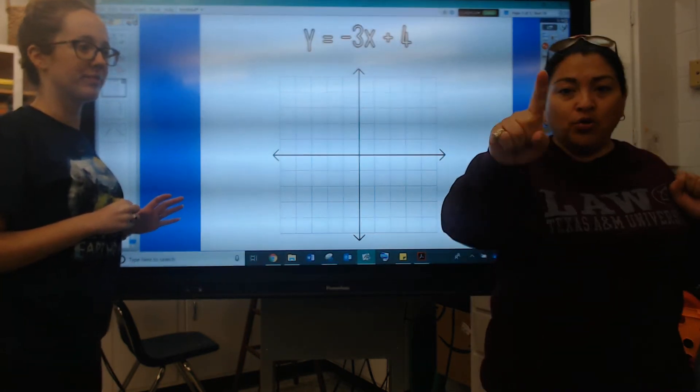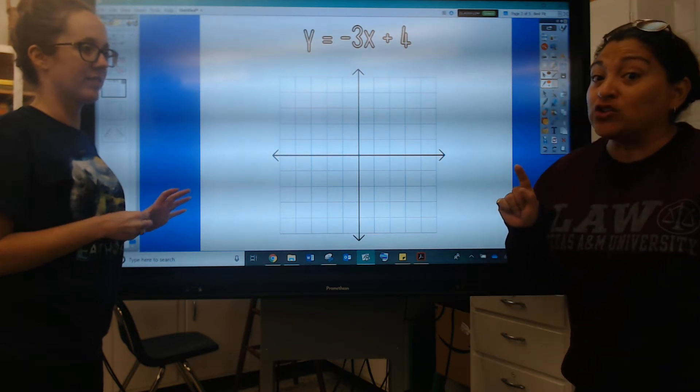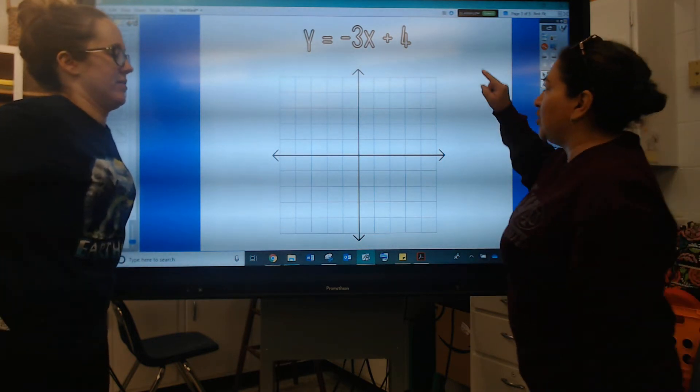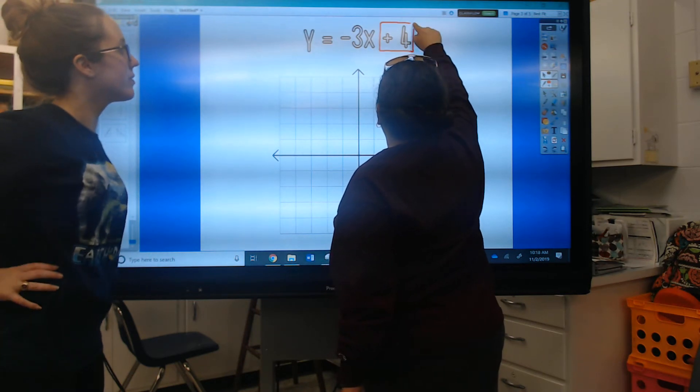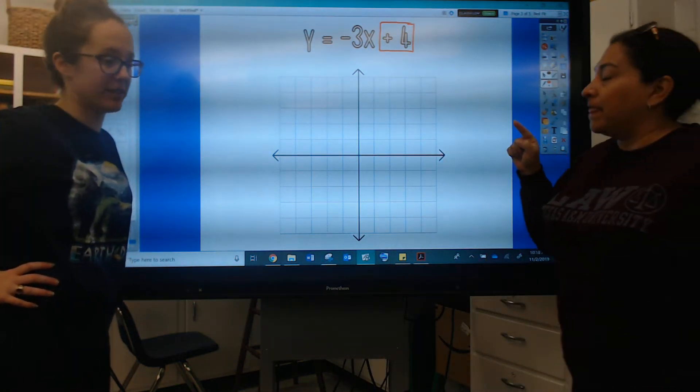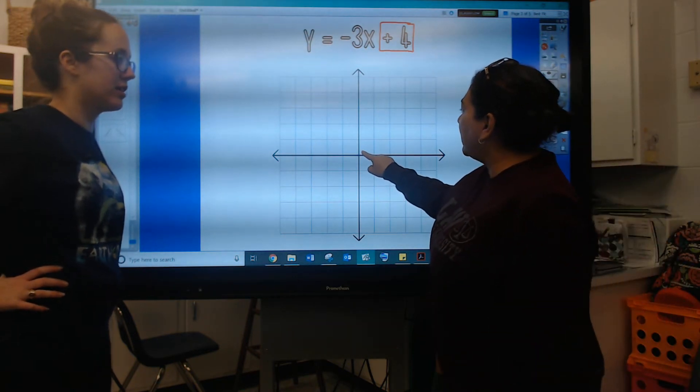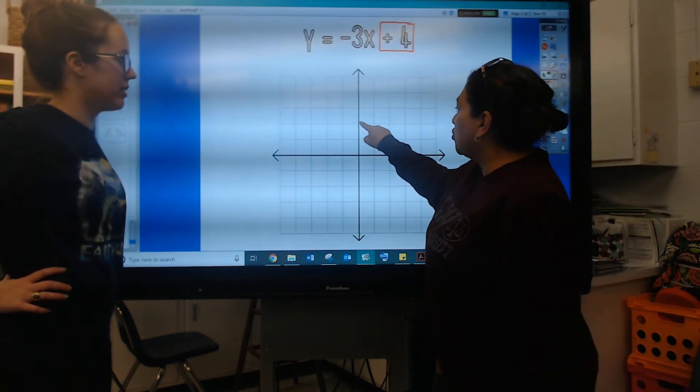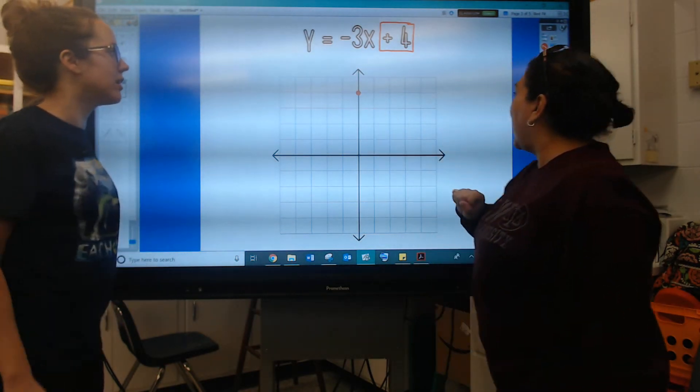So step number uno is put a box around your y-intercept which is right there. Make sure you put the sign with it. Yes that is a positive 4 so I'm going to start at zero and I'm going to count one two three four and I'm going to put a dot right there.